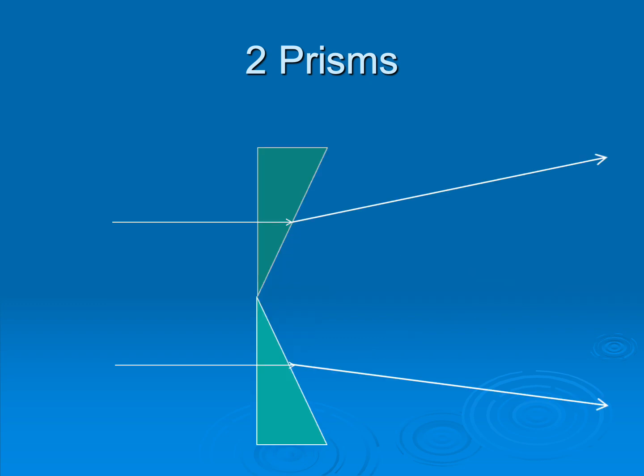Now here, I'm stacking two prisms apex to apex. As you can see, because of rule one, the rays are bending towards the base. And in this case, diverging. This is clearly a minus lens, two prisms stacked apex to apex.